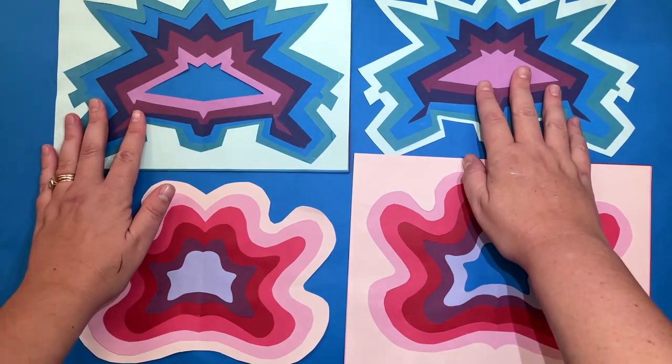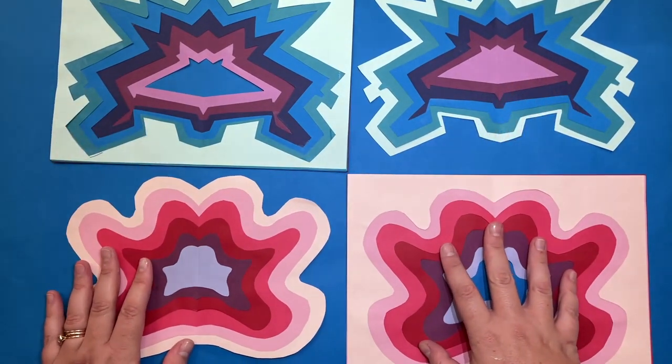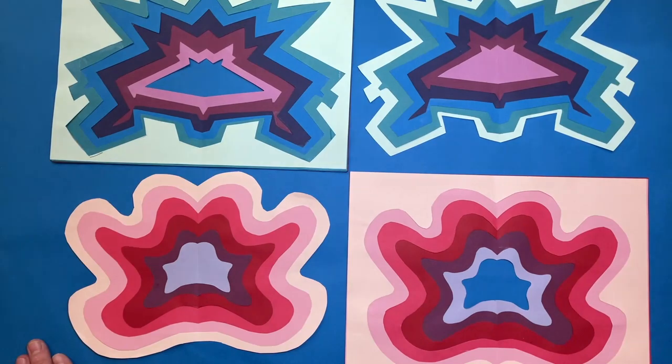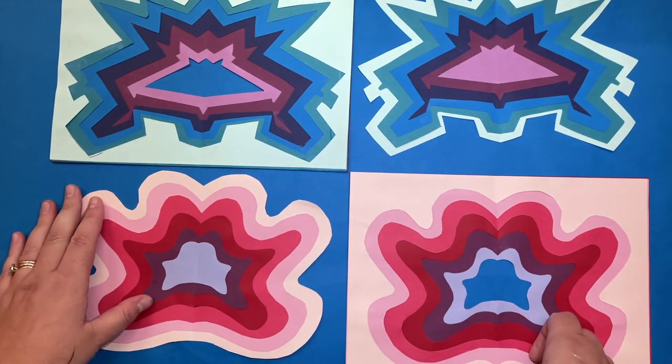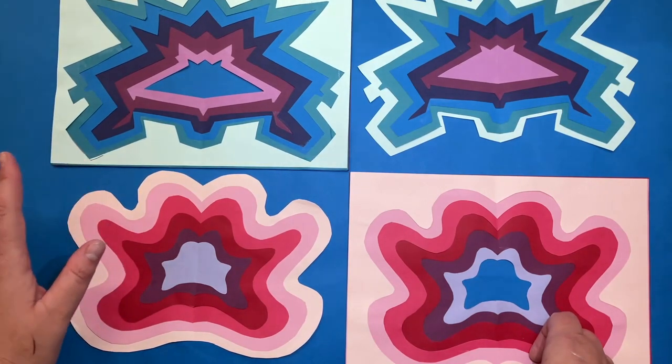Regardless of what type of shape we are going to be doing today, our goal is to make them symmetrical, so same on both sides. We are also going to be focusing on our cutting skills.